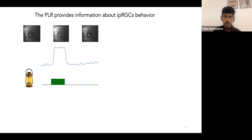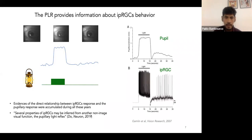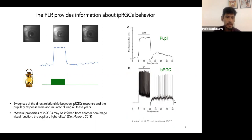In 2007, Paul Gamlin and colleagues demonstrated that there are surprising similarities between the IPRGCs response dynamics and the pupillary response dynamics. Evidence of a direct relationship between IPRGC response and pupillary response accumulated throughout these years. Several properties of IPRGCs may be inferred from this non-image visual function, and the pupillary light reflex was also recognized recently as such a tool.